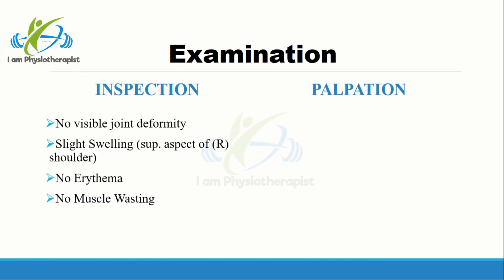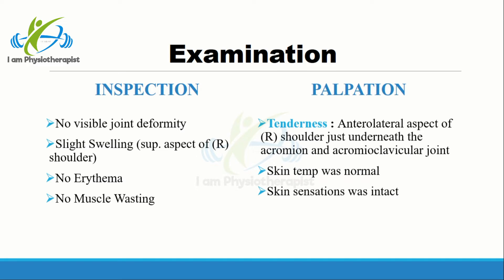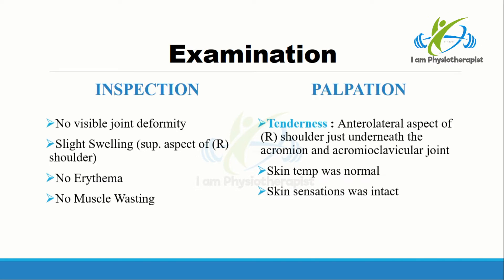On inspection of the right shoulder, there was no significant joint deformity, erythema, or muscle wasting. Slight swelling was present on the superior aspect of the shoulder at the region of the subacromial bursa. On palpation, skin temperature was normal, skin sensations were intact, and there was tenderness present at the anterolateral aspect of the shoulder, just underneath the acromion and acromioclavicular joint.